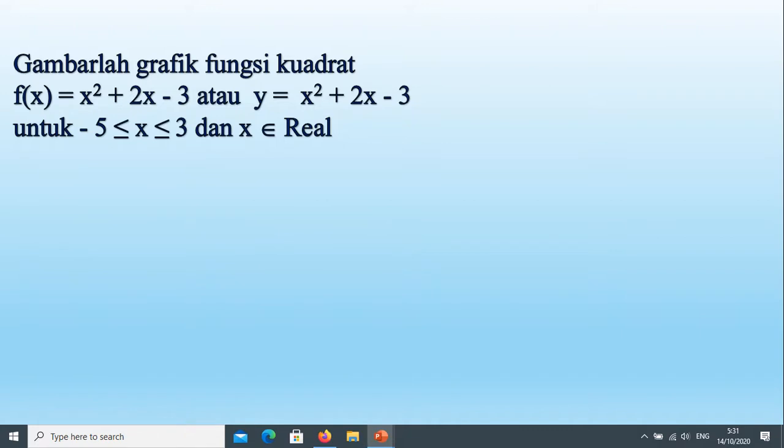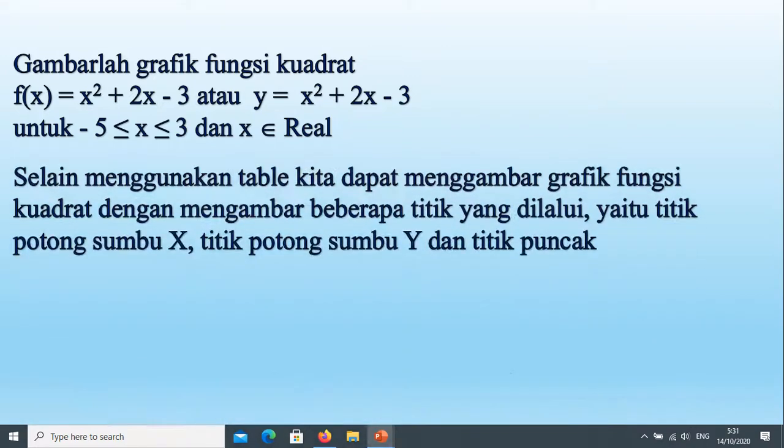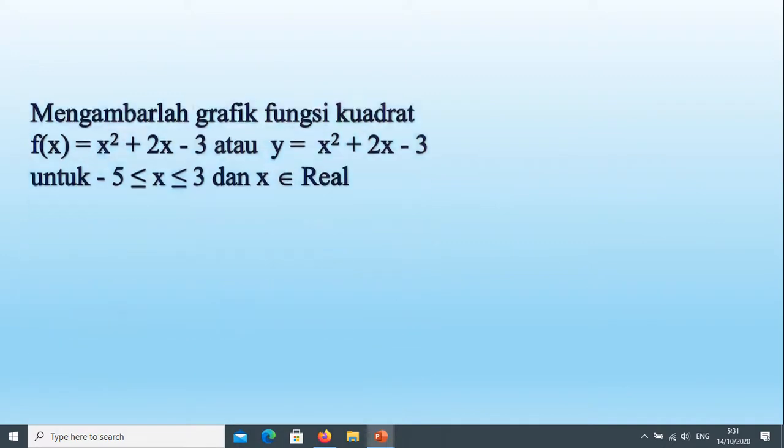Misalnya kita perintah gambar grafik fungsi kuadrat f(x) sama dengan x kuadrat tambah 2x kurangi 3 atau y sama dengan x kuadrat tambah 2x kurangi 3. Selain kita menggunakan tabel, kita dapat menggambar grafik fungsi kuadrat dengan menggambar beberapa titik yang dilalui, terutama titik-titik yang titik potong sumbu x, titik potong sumbu y, titik puncak, dan titik pada ujung-ujung dari interval itu yang kita gambarkan baru kita hubungkan.